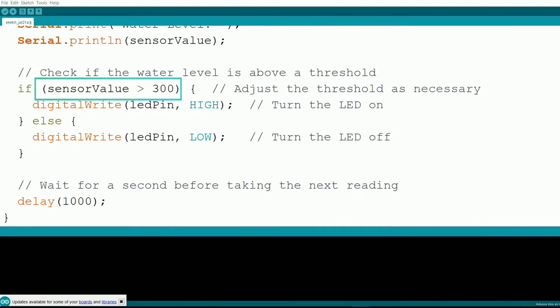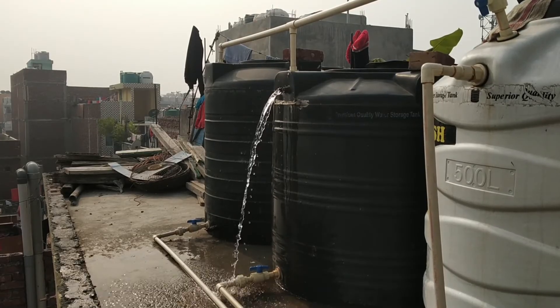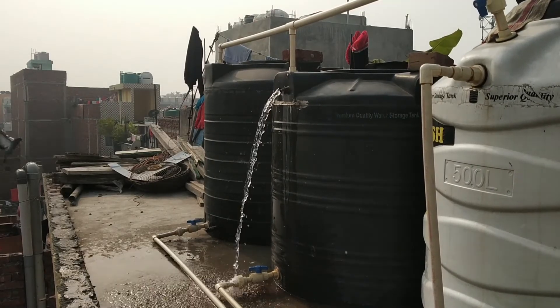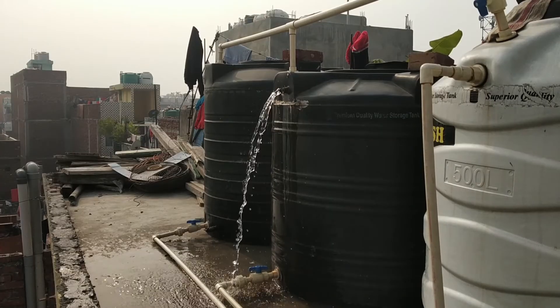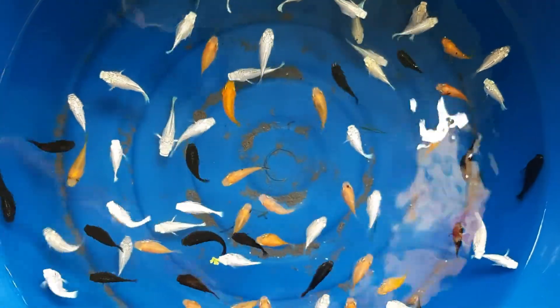Now let's see how this Arduino project can be used in a real-world application. Imagine you have a water tank that you want to monitor to prevent overflow. This setup can help you keep track of the water level and alert you when it's too high. Or maybe you have a fish tank and you want to be alerted when the water level is too low.